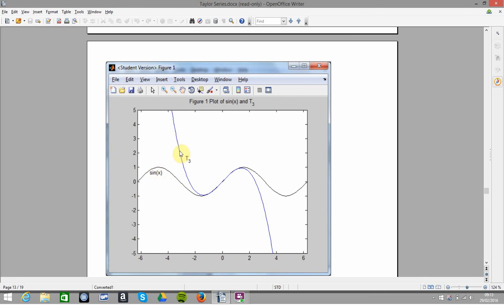And then t3, so we're getting the first three terms, so we're getting up to x squared. And if we look at the plot here, you can see it's quite accurate, say from minus 1 to plus 1.